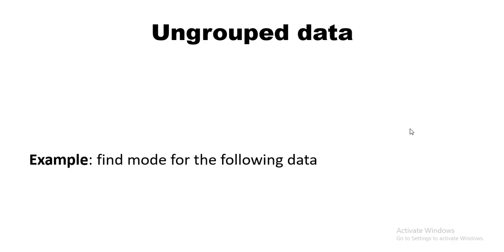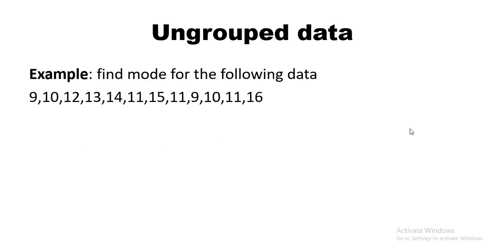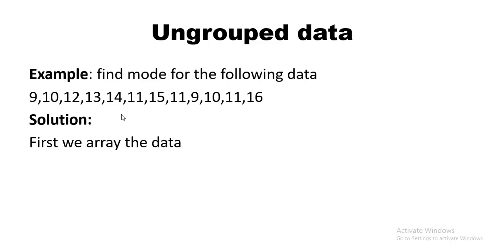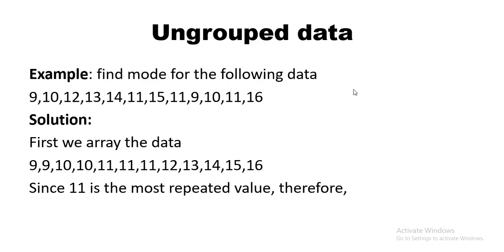For the first example — ungrouped data — we need to find the mode. We don't need to organize the data; we just look for the observation which is repeating the most. Arranging the data into an array is optional. In this example, 11 is repeated three times, so the most repeated value is 11. Therefore, mode = 11.